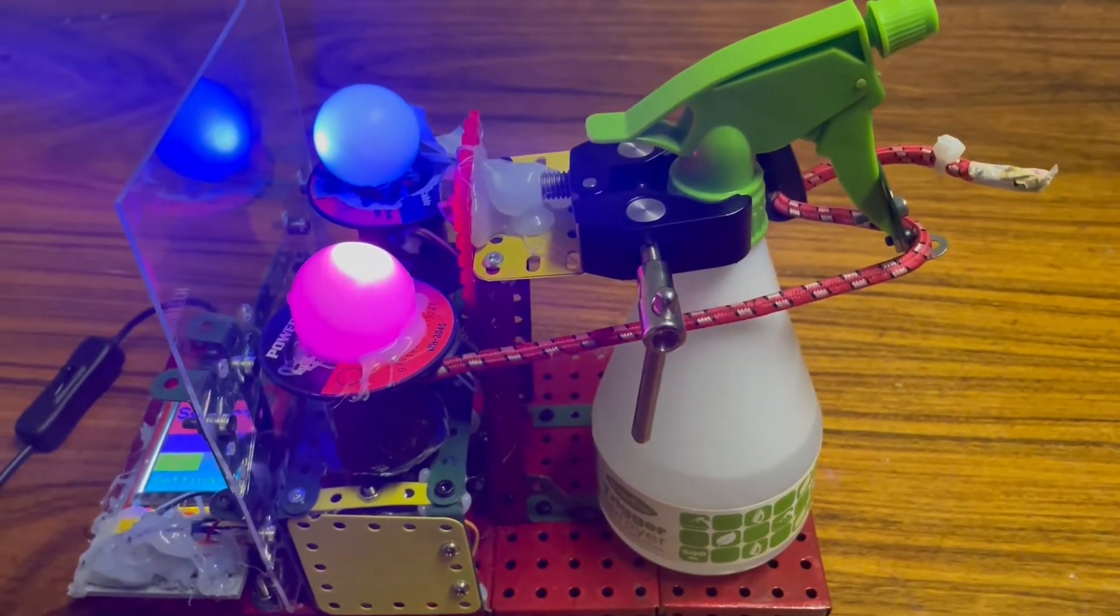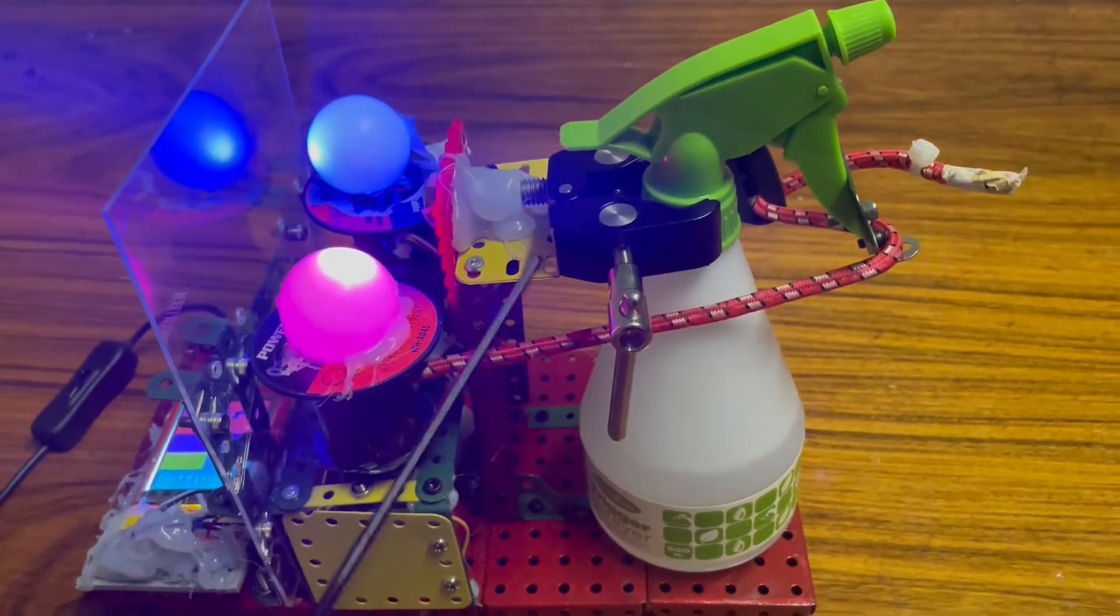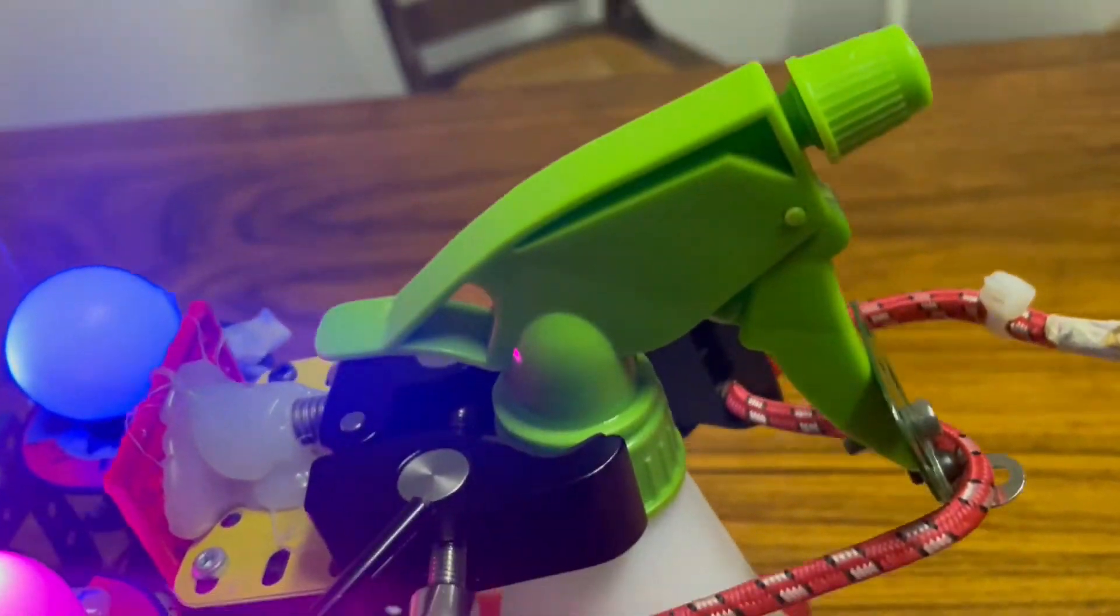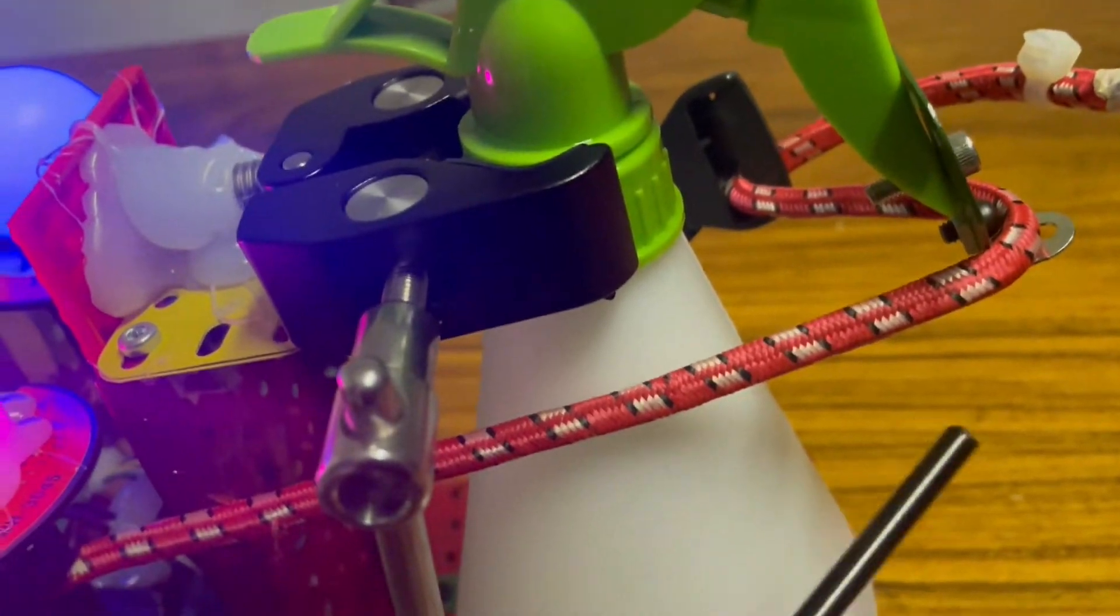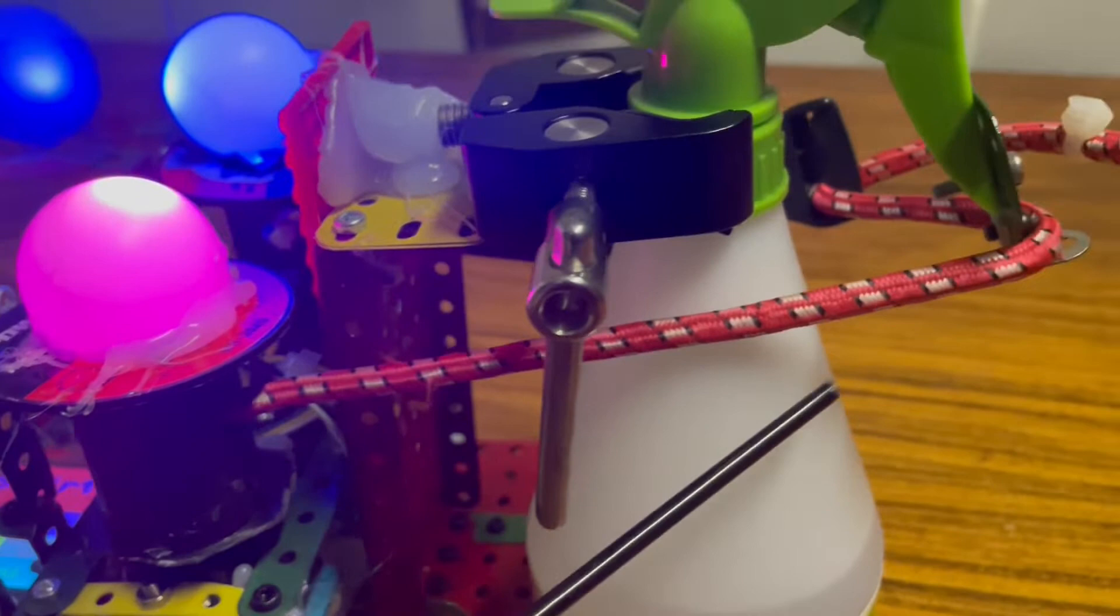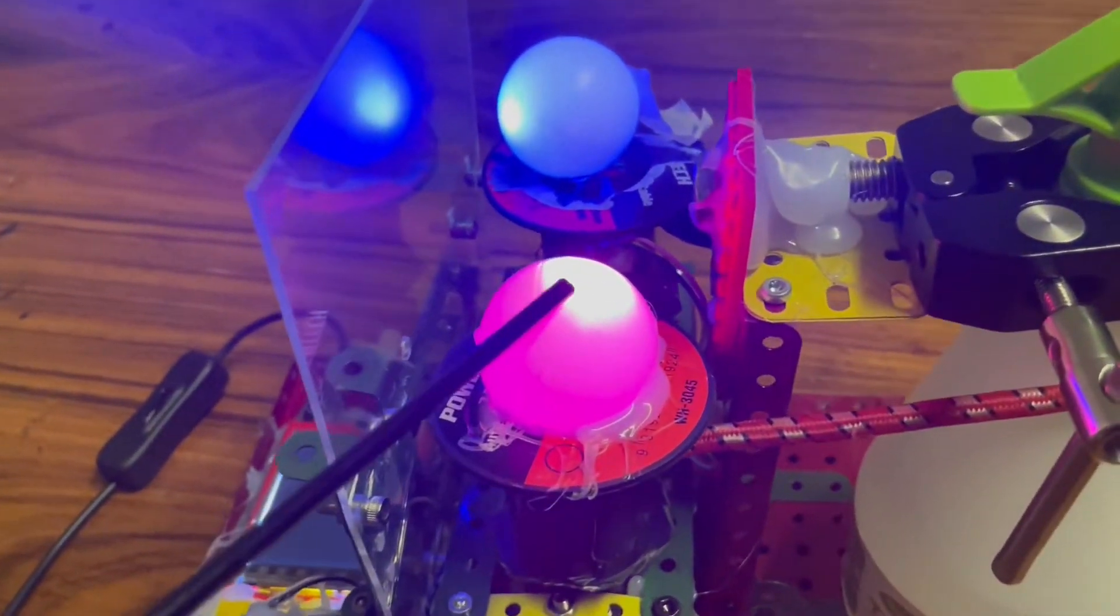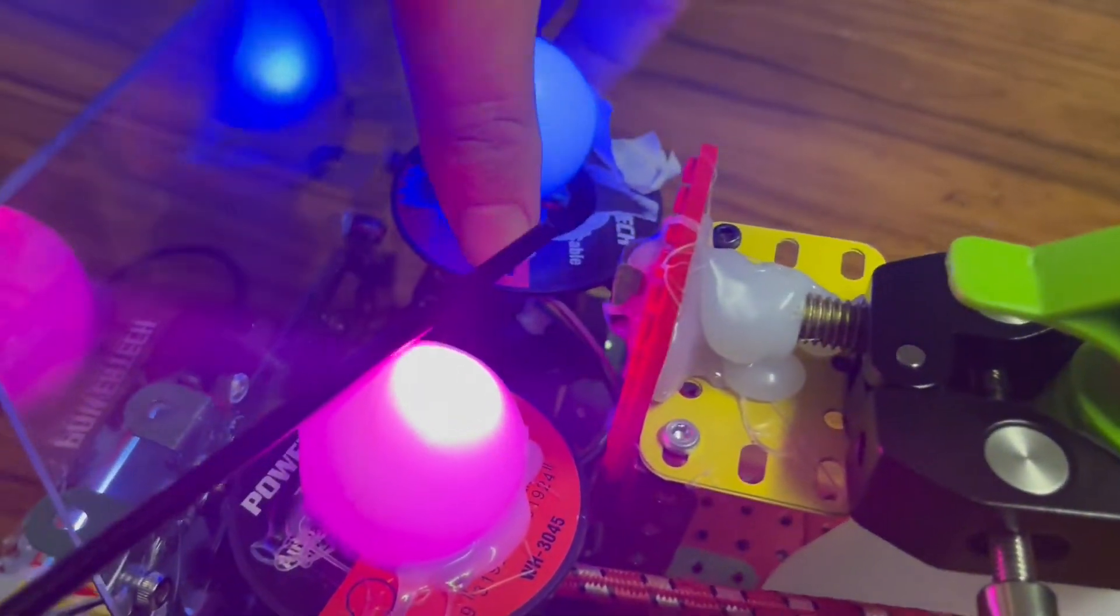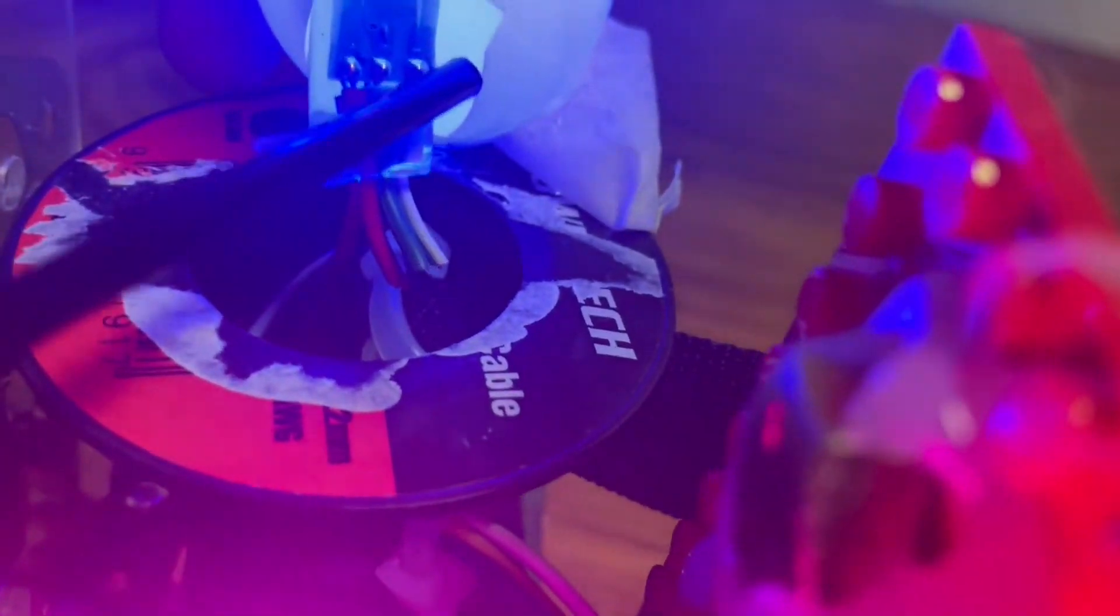Hi everyone. So I finished the water spray alarm clock and it comes in three parts. So the first part is here and this holds the water spray bottle and it's got this clamp on it here to hold onto the spray bottle while the trigger is being pulled and it's got a bungee cord, which wraps around the trigger. And then the second part consists of these two servos here and these have both got lights on them. And the lights are just addressable LEDs, which I've put inside a ping pong ball with a hole in it.